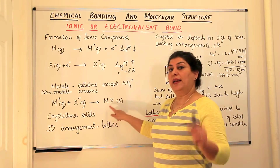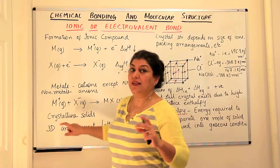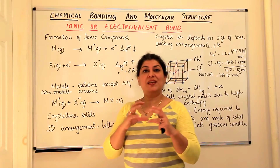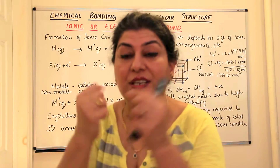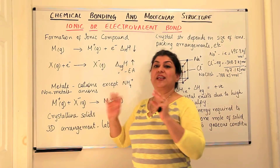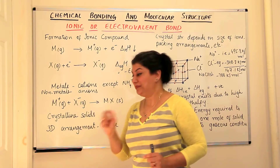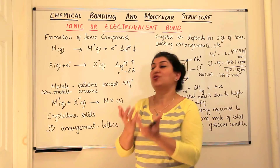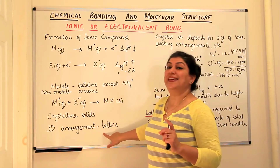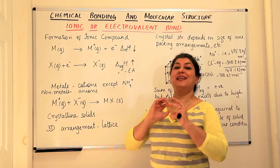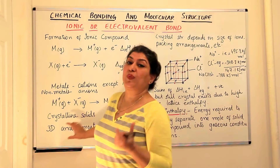These electrovalent compounds that are formed are crystalline solids. When we say they are crystalline, they are not amorphous — they have definite structures. Each crystalline solid has a distinct shape, and this three-dimensional arrangement of ions in the electrovalent compound forms a structure known as the lattice. The lattice is basically the three-dimensional arrangement of cations and anions in an electrovalent crystal.